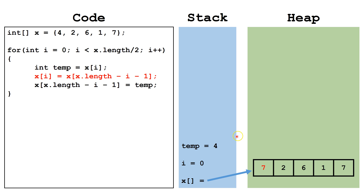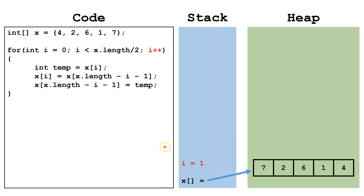Next, we copy the value from the index opposite x[i] into x[i]. Finally, we copy the value from temp into the index opposite x[i]. At the end of the loop, we increment i by 1, bringing i to 1.